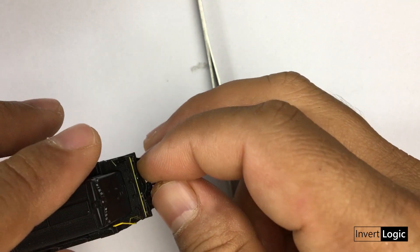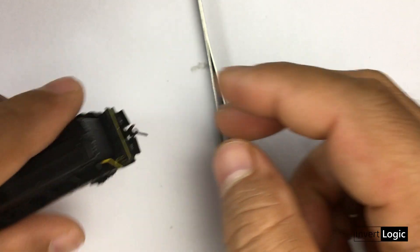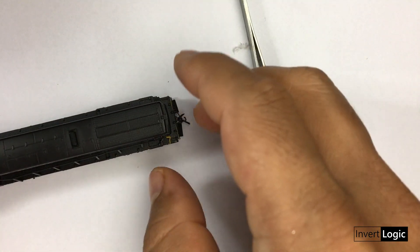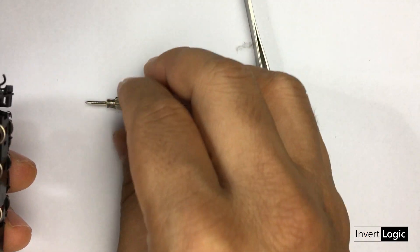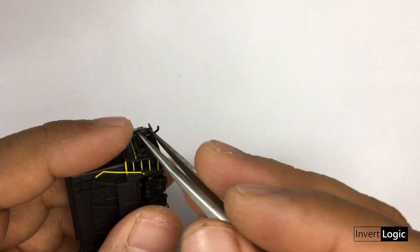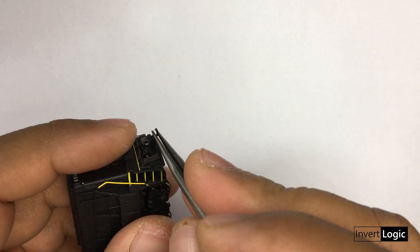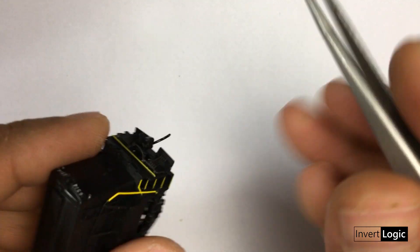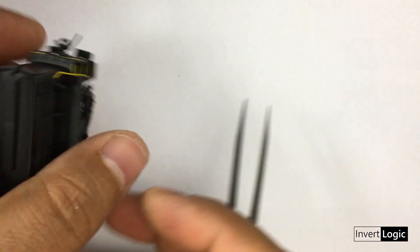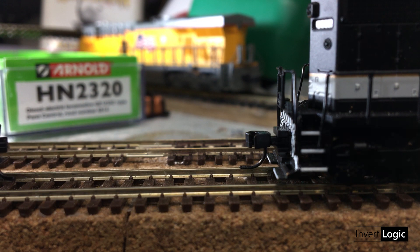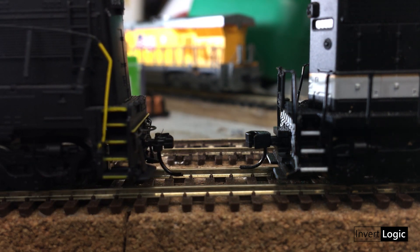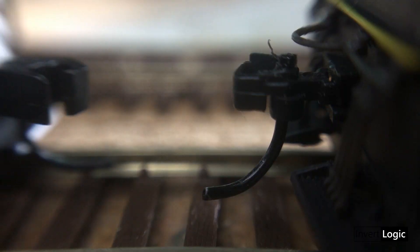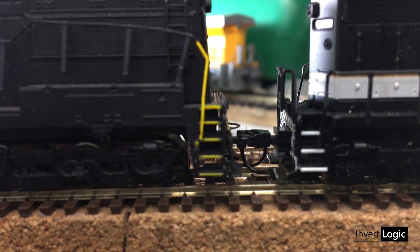Now we can test this on a track with another locomotive. As you can see, we can easily push it and it just grabs the other coupler. It's working fine and good to go.